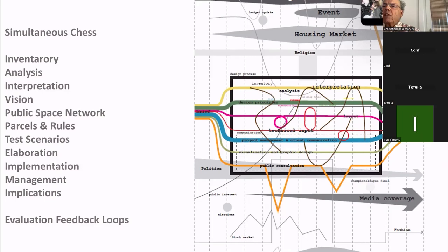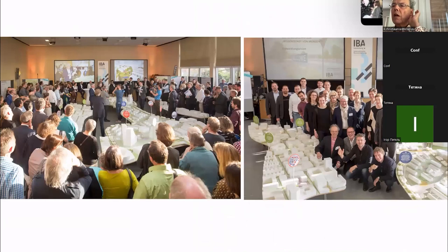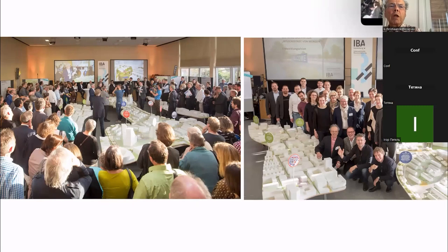We always set up a process of simultaneous chess in which, as much as possible, the stakeholders are already present and can have their influence. This is a typical image of how we process projects — the IBA in Heidelberg, one of the former American US Army bases — in which we create a new innovation district with a large model, exactly because with a large model it's very easy to communicate with stakeholders how to proceed and take up adjustments and feedback.